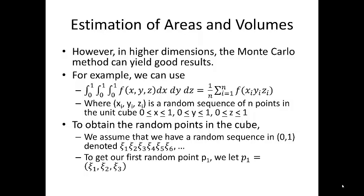Now to obtain these random points, we have a random sequence in (0,1), and we denote these as xᵢ₁, xᵢ₂, xᵢ₃, xᵢ₄, xᵢ₅, xᵢ₆. To get our first random point, we simply select the first 3, and that will give us the first point in 3D space. Of course, p₂ is going to be xᵢ₄, xᵢ₅, xᵢ₆.